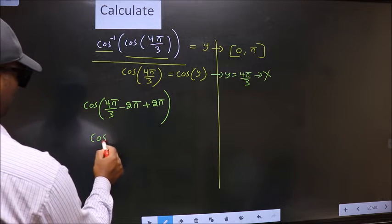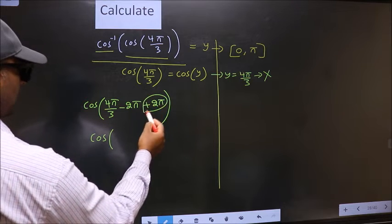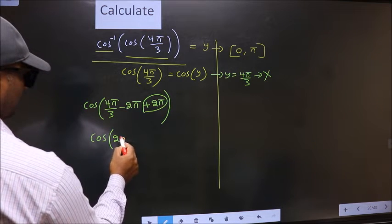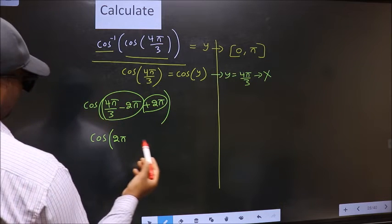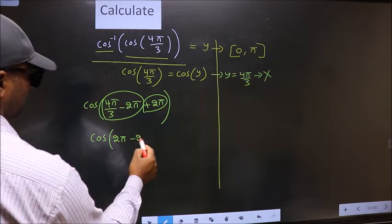Cos. Now this 2 pi I write at the start. And you calculate this. 4 pi by 3 minus 2 pi. We get minus 2 pi by 3.